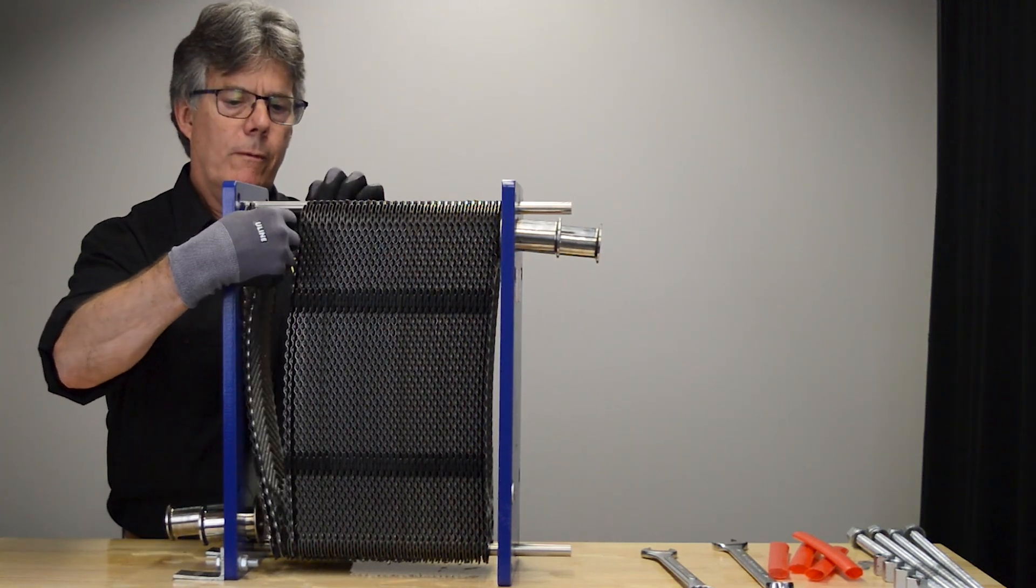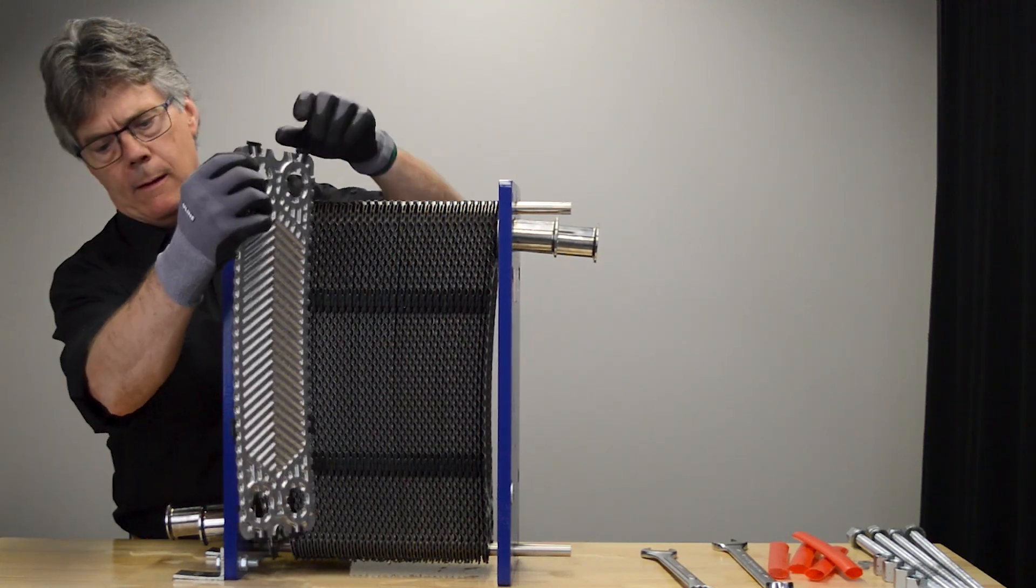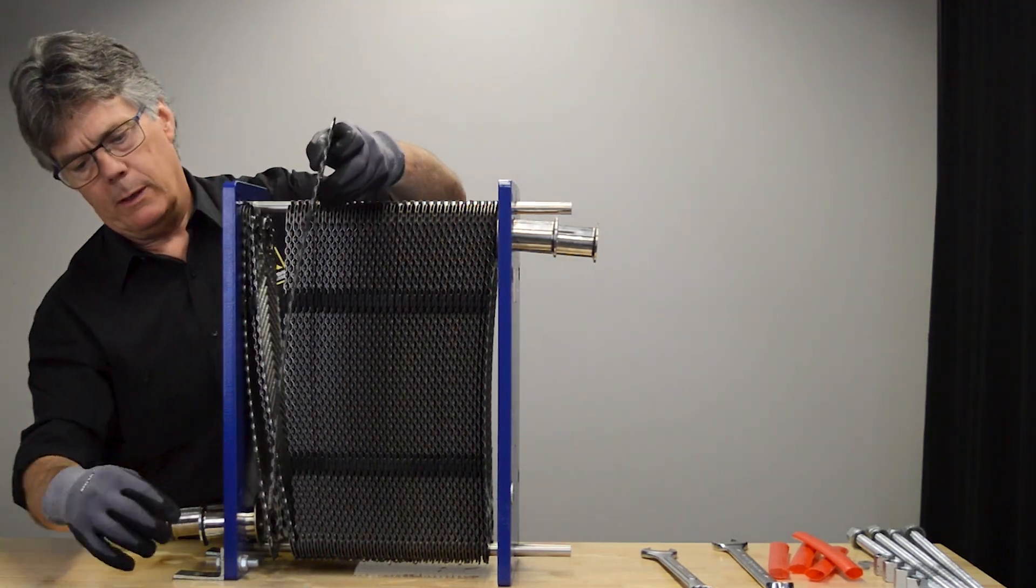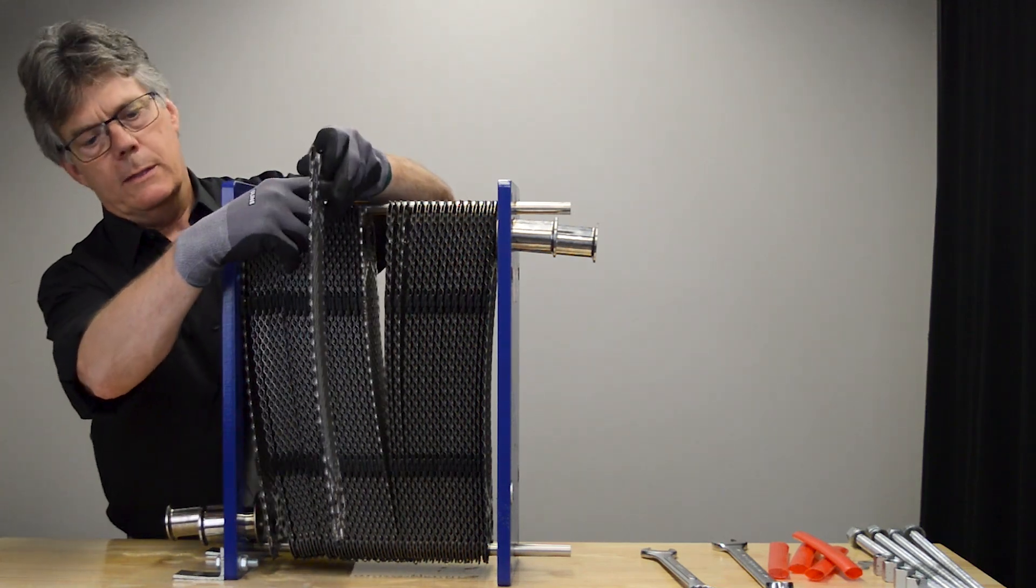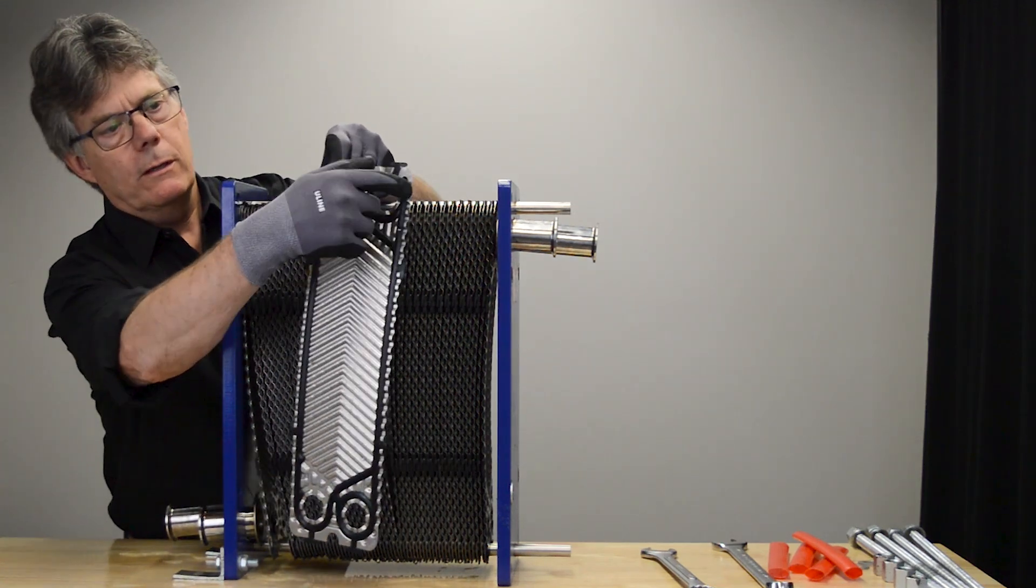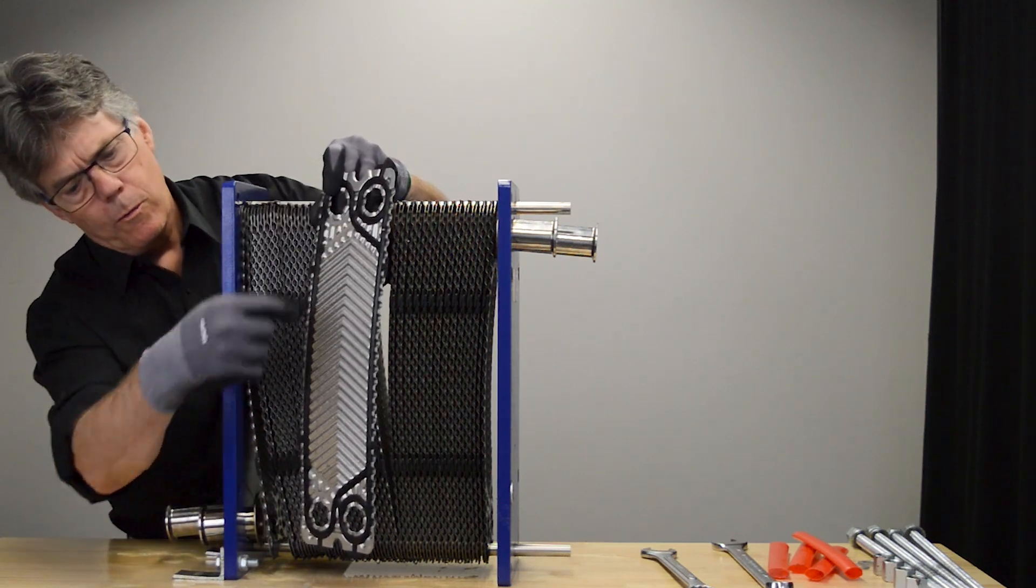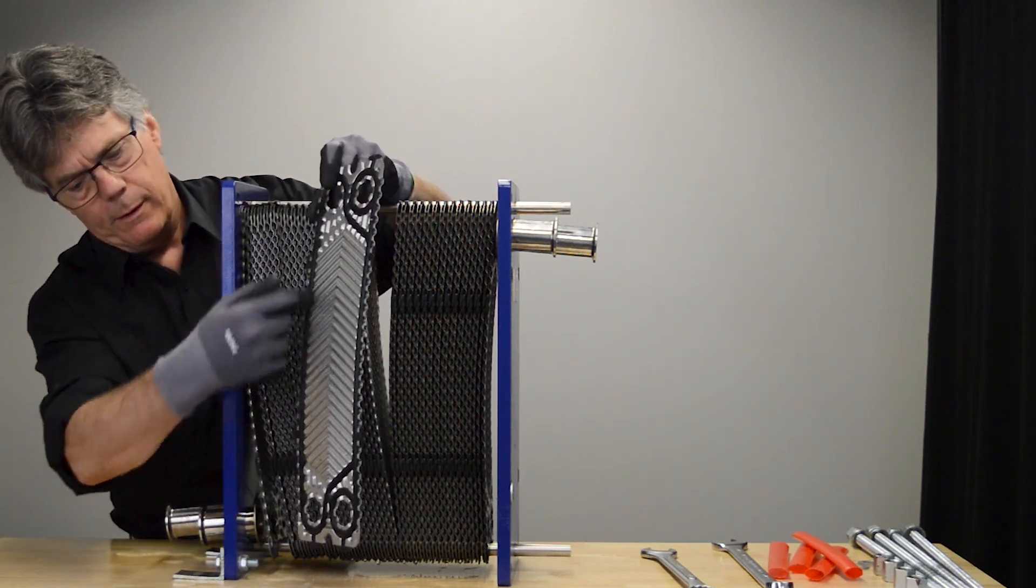And this is a regular flow plate, so the product comes in through the end here, and it flows up here and up this side. The products never cross over, they always go up and up the other side or down.